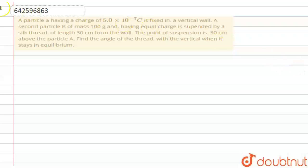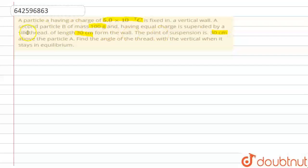Hello everyone, let's solve this question. A particle having a charge of 5 × 10⁻⁷ coulomb is fixed in a vertical wall, and a second particle having a mass of 100 grams and equal charge is suspended by a silk thread of length 30 centimeters from the same wall. The point of suspension is 30 centimeters from the first particle. We need to find the angle of the thread with the vertical when it stays in equilibrium.